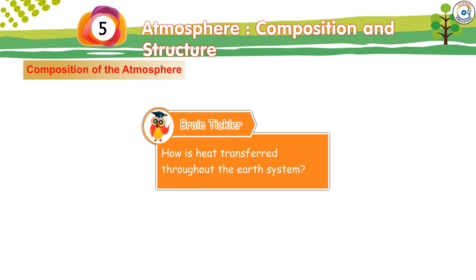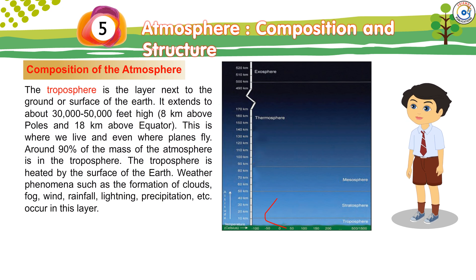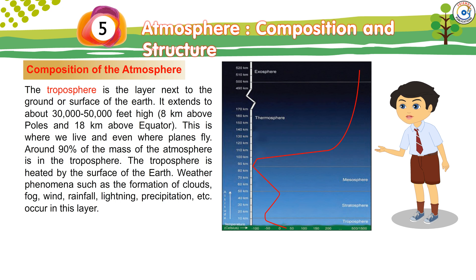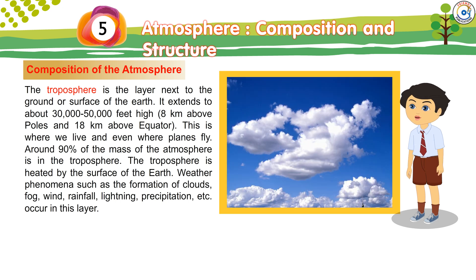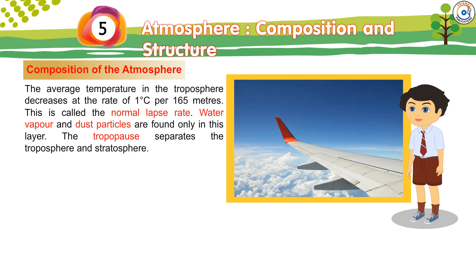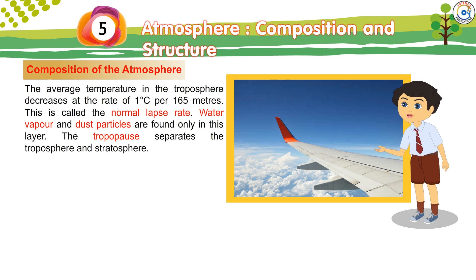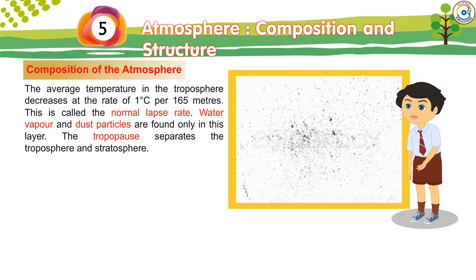Brain Tickler: How is heat transferred throughout the Earth system? Here is a graph showing different layers of the atmosphere. The troposphere is the layer next to the ground or surface of the Earth. It extends to about 30,000 to 50,000 feet high — 8 kilometers above the poles and 18 kilometers above the equator. This is where we live and where planes fly. Around 90% of the mass of the atmosphere is in the troposphere, which is heated by the surface of the Earth. Weather phenomena such as clouds, fog, wind, rainfall, lightning, and precipitation occur in this layer. The average temperature in the troposphere decreases at the rate of 1°C per 165 meters — called the normal lapse rate. Water vapor and dust particles are found only in this layer. The tropopause separates the troposphere and stratosphere.